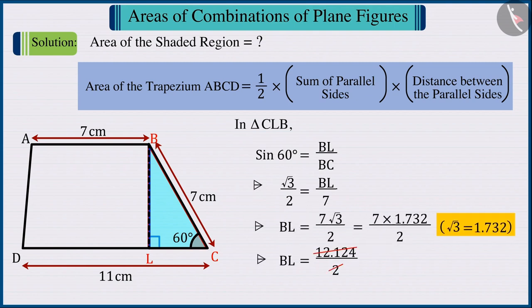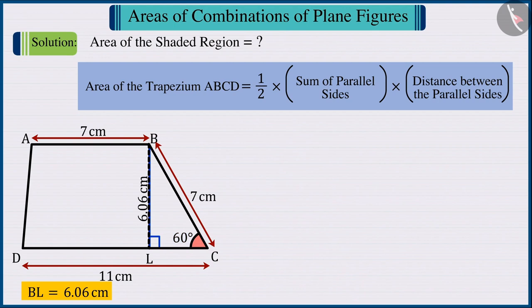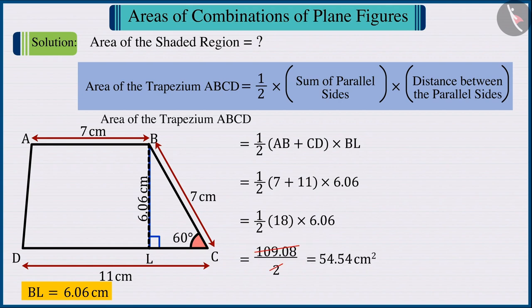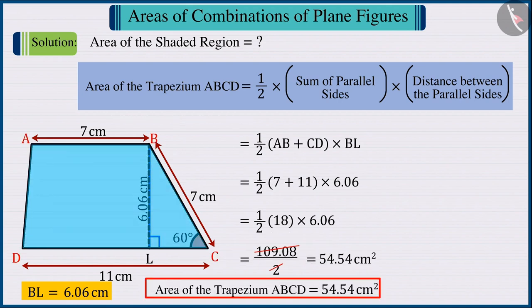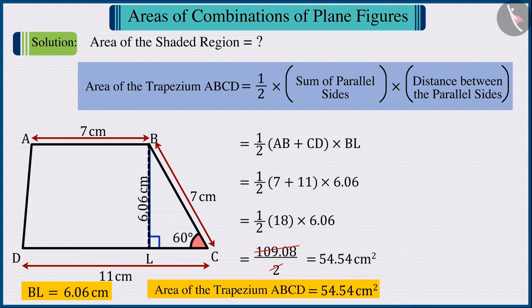the measure of BL is obtained as 6.06 cm. Hence, substituting the values of AB, CD and BL in the formula for the area of a trapezium and solving, we can find the area of trapezium ABCD, which is 54.54 cm².